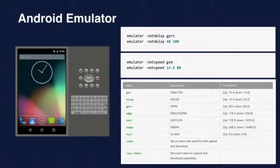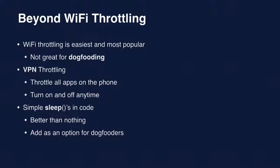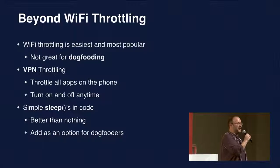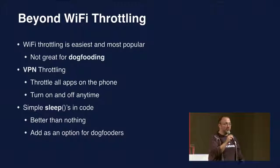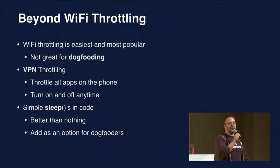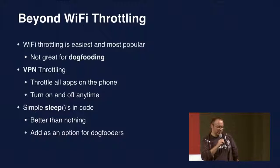There's also the Android emulator, which provides parameters to tell it you want to be on Edge, GPRS, or Wi-Fi, with actual delay and speed settings. The tricky thing about Wi-Fi throttling is you can't really dogfood — you can test, but you can't take it on a bus and use it in daily life. Dogfooding is very important for understanding how features feel. So we have a couple of ideas: one is VPN throttling — building a VPN app that can throttle all apps on your phone all the time, working with the current network.